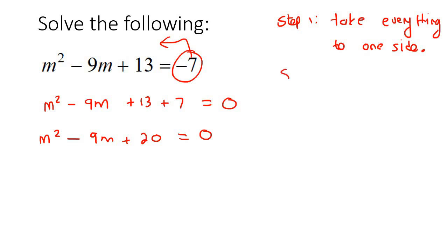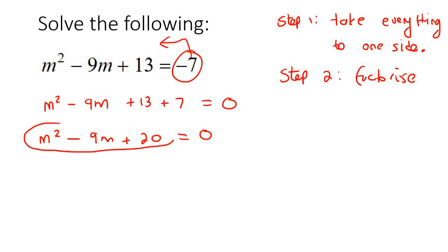Now, once you've done that, you are going to factorize. Always look for a common factor first — if you've watched my videos on factorizing, you'd know that's what we've been saying. Take out a common factor first, then after that, see if it's a difference of squares or a trinomial. Here, we can't take out a common factor, so that part's done. We realize that this is a trinomial.